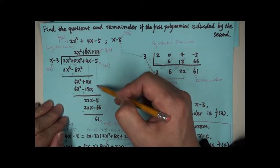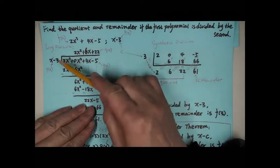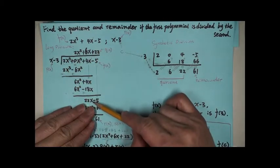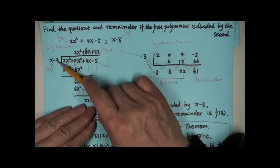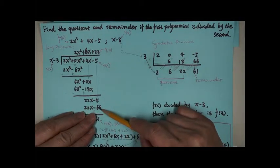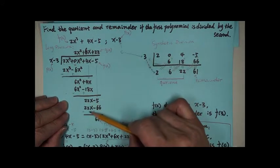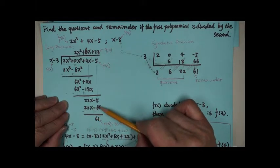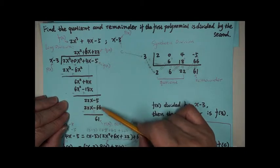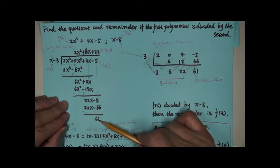Now we move this negative 5 down here. There again we need to eliminate 22x. Here is x and here is 22x, so apparently we need 22. 22 times x is 22x, 22 times negative 3 gives us negative 66. We can see: 22x minus 5, minus downstairs — switch the sign — negative 22x and then positive 66. Positive 22x and negative 22x cancel each other, and positive 66 plus negative 5 gives you 61, and this is the remainder.